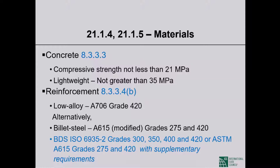The preferred reinforcement type is ASTM A706, which comes only in Grade 60 (420 MPa). Alternatively, ACI 318 allows normal A615 steel Grade 40 and 60 with supplementary requirements. BNBC 2020 also allows Bangladesh Standard ISO 6935-2 Grades 300, 350, 400, and 420. That is the only difference between ACI 318 and BNBC 2020 regarding reinforcement: this Bangladesh standard reinforcement is allowed in high seismic applications.